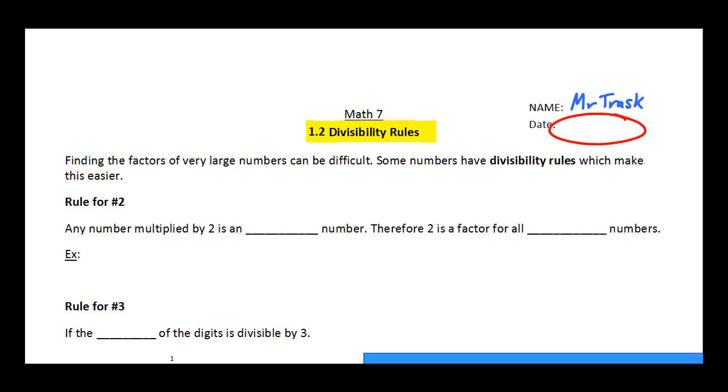Divisibility rules are basically just a set of rules we come up with because sometimes numbers, if they get very, very large, it can be difficult to tell whether or not a smaller number is a factor of that large number. And so for a bunch of the common numbers, we have these rules that just help us with that little shortcut.